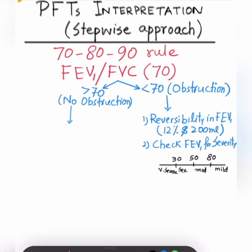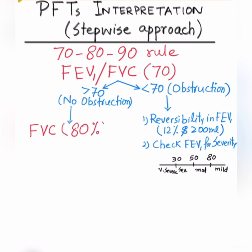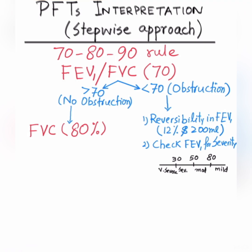On the other hand, if the ratio is more than 70, the next step is to check FVC. On the obstructive side we were checking FEV1; on this side we check FVC alone as a percentage. As per our rule, the cutoff number here is 80. Restrictive lung diseases don't retain volume in the lungs, whereas obstructive ones do. If FVC is more than 80% of predicted, it rules out restrictive lung disease.